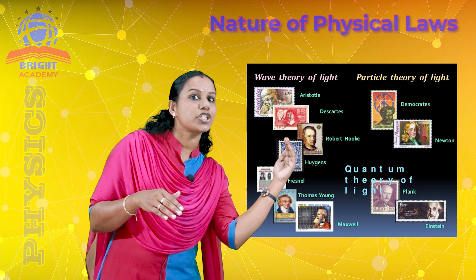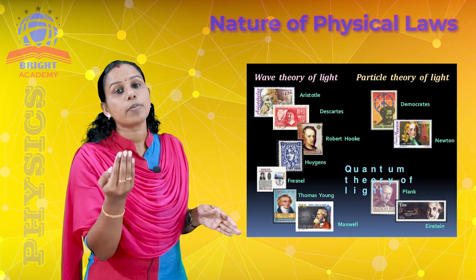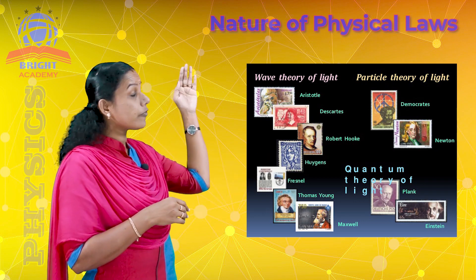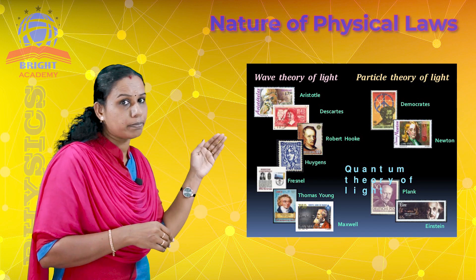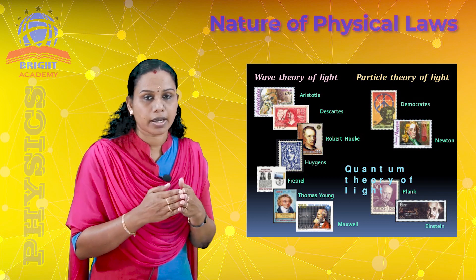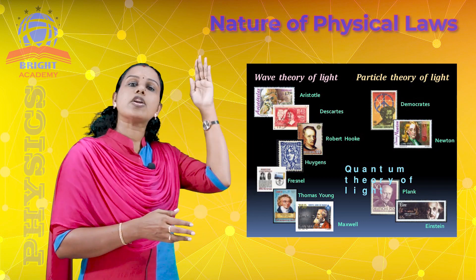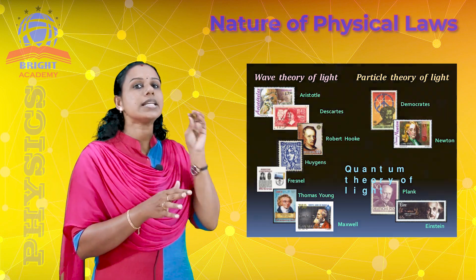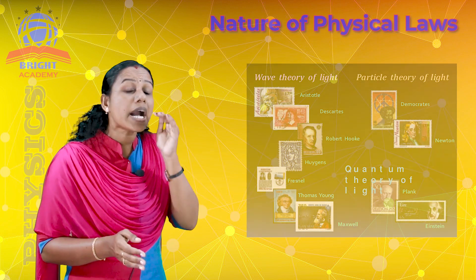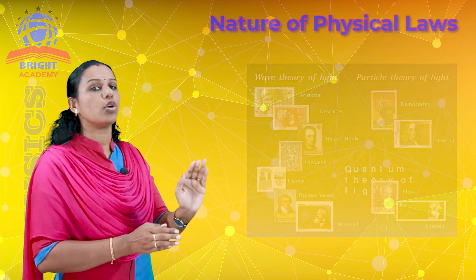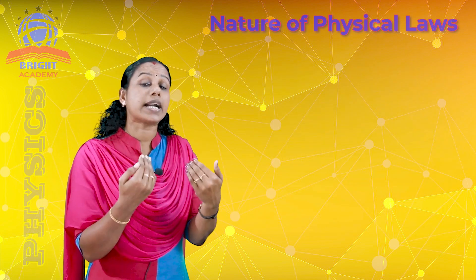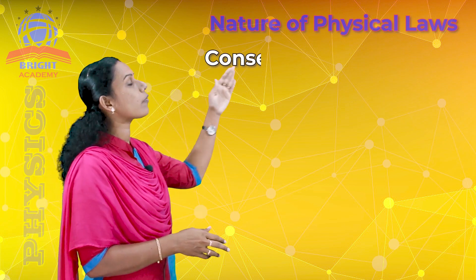For some phenomena we can use particle nature, and for other phenomena we can explain using the wave nature of light. Physical laws, when derived, go through changes and contradictions. In all these laws, we can see that certain quantities are conserved — conserved means constant — and there is a category called conservation laws.